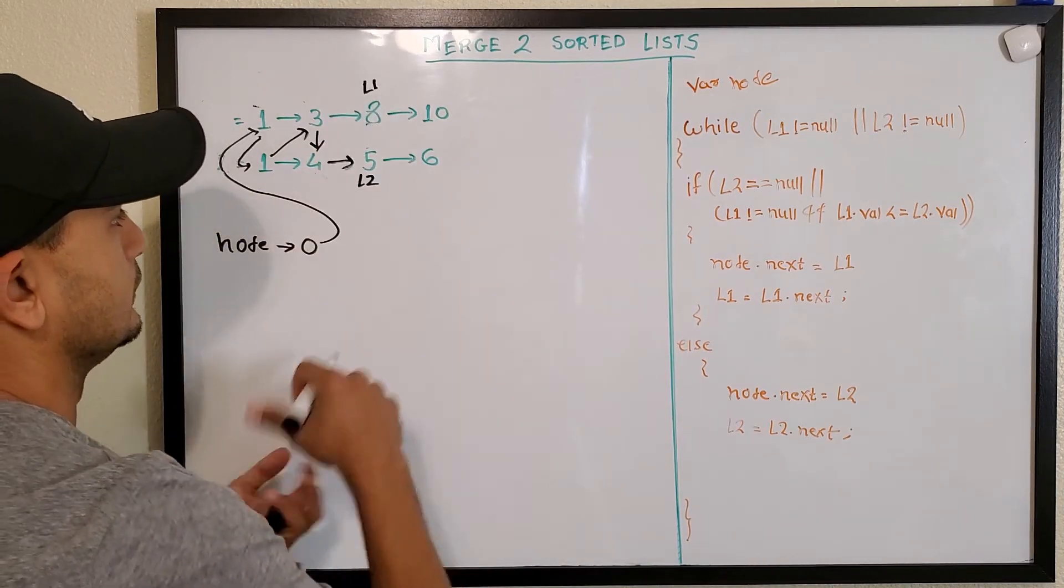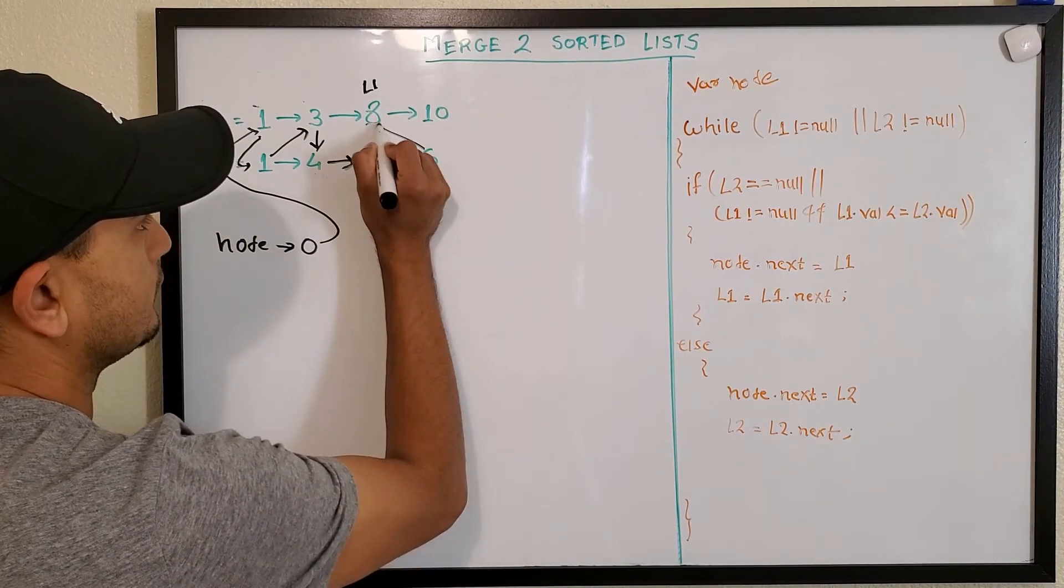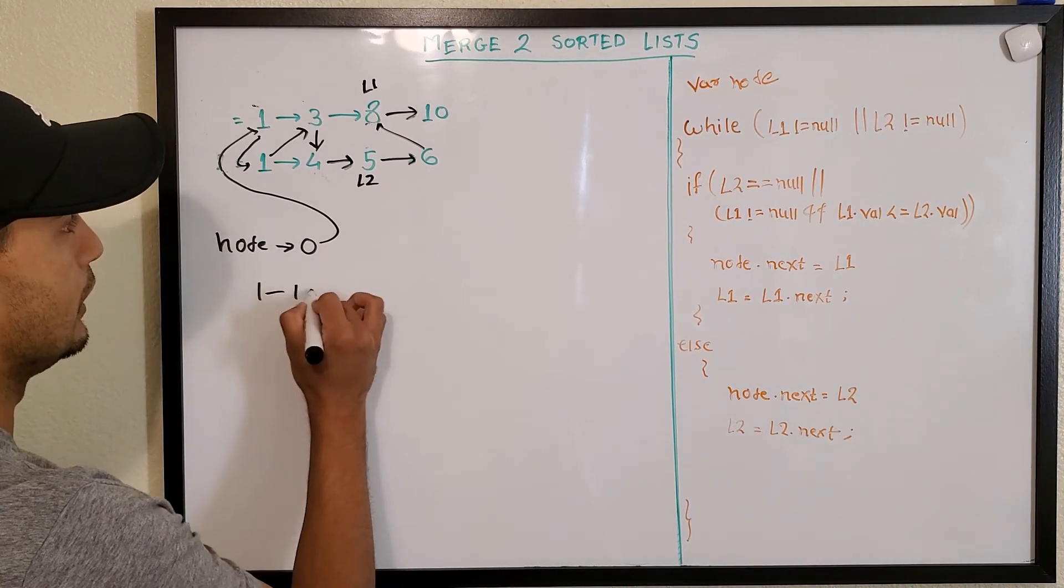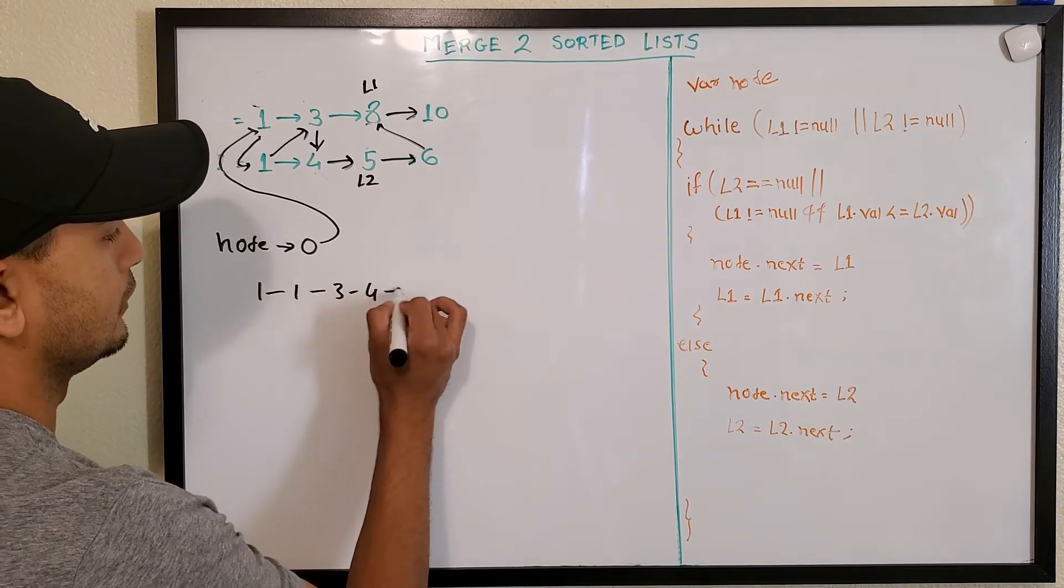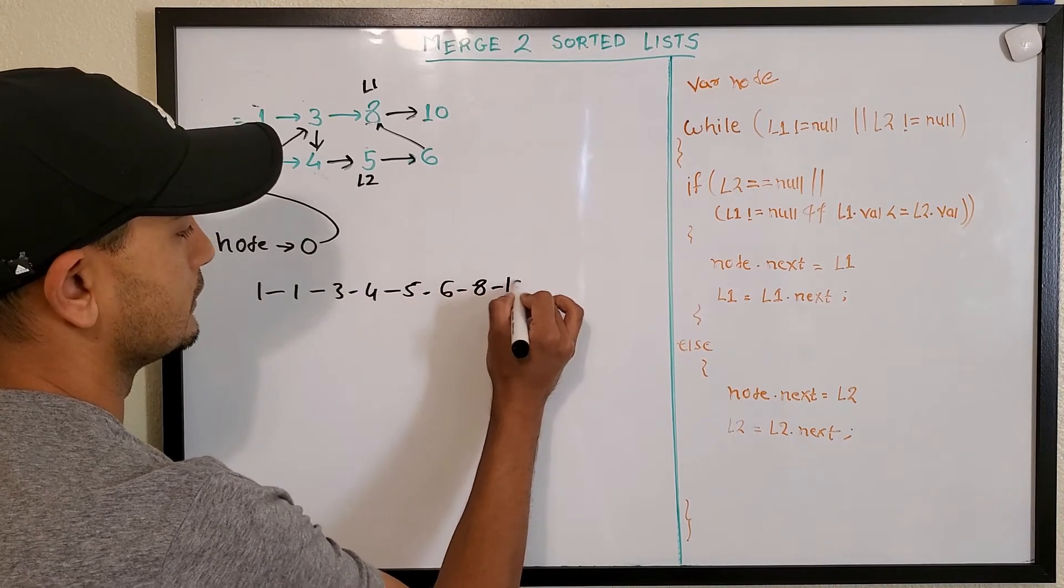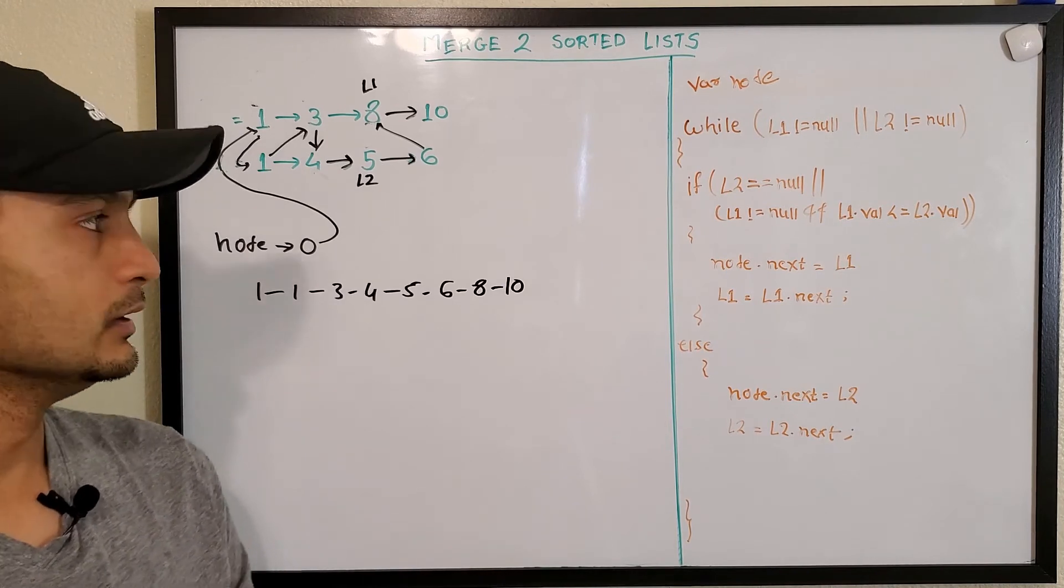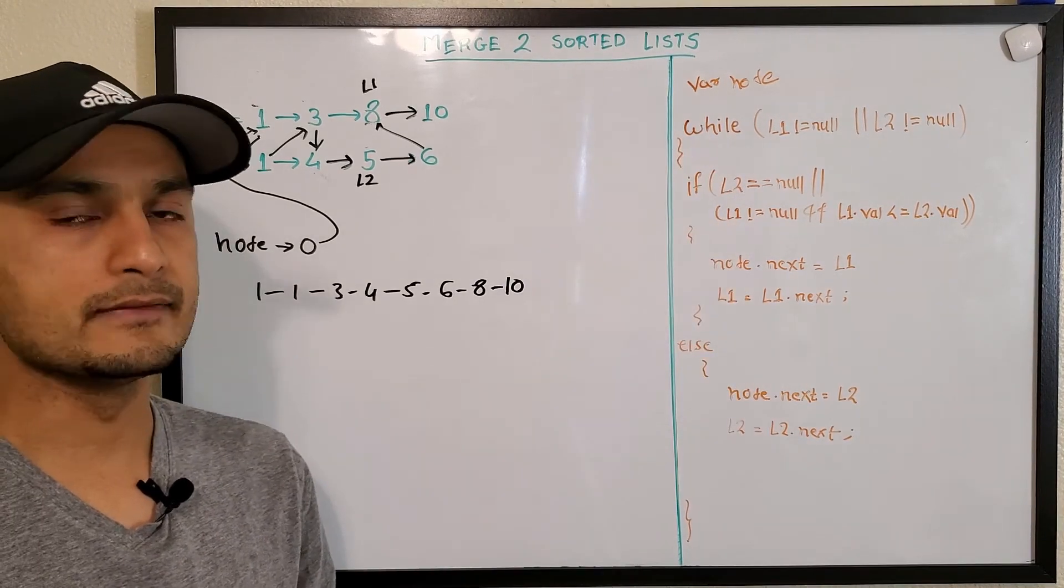Sorry, so this will be like this, and then this, and then this. Done. So our merged list would be 1, 1, 3, 4, 5, 6, 8, 10. There you go, pretty straightforward, just a simple loop and then we have one merged list.